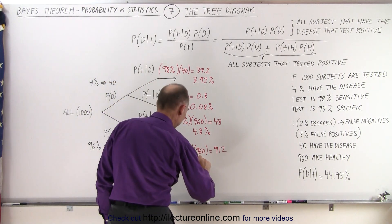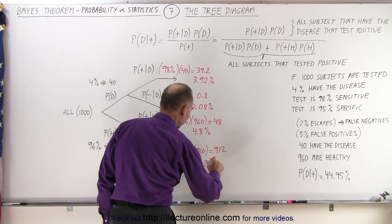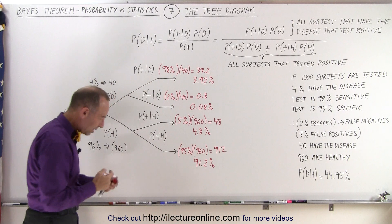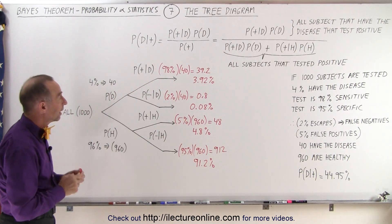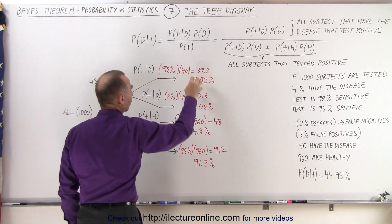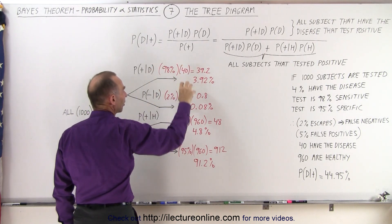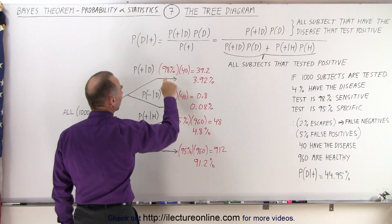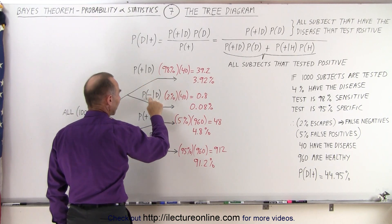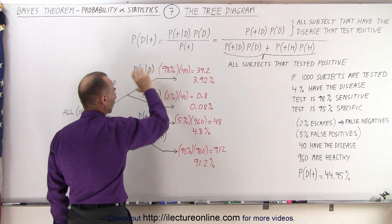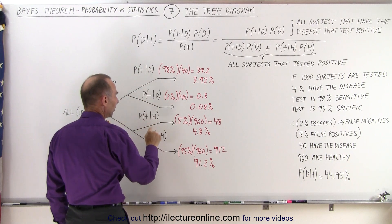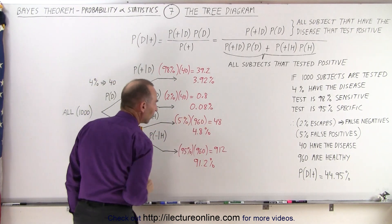So that's what the tree diagram looks like. It gives you all the numbers associated with the ones that are diseased and ones that are healthy, and percentage of the total, and of course, the number that test positive, the number that test negative for the ones that have the disease, the ones that test positive, the ones that test negative when they are healthy.